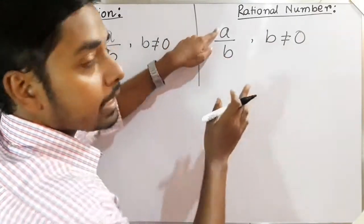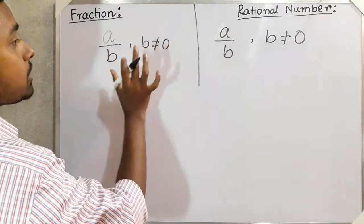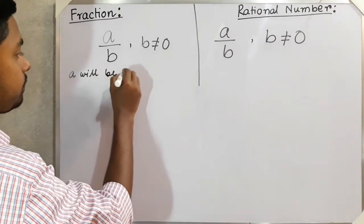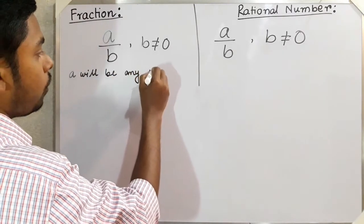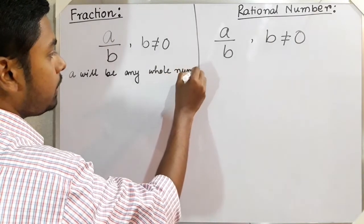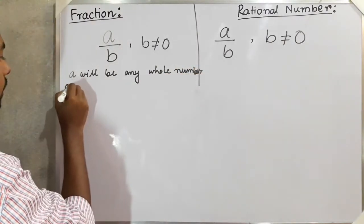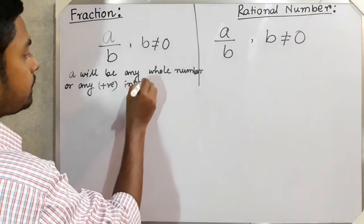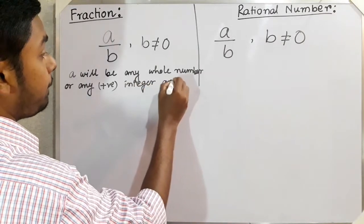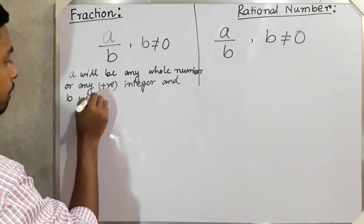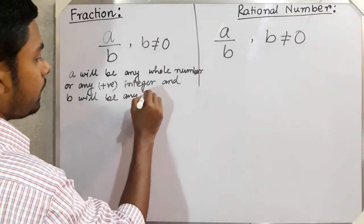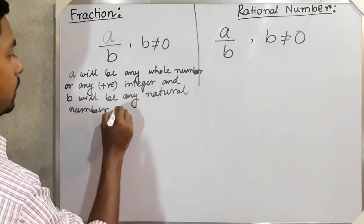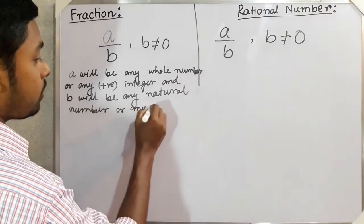So what is the difference? In a fraction, a will be any whole number or any positive integer, and b will be any natural number or any positive integer.